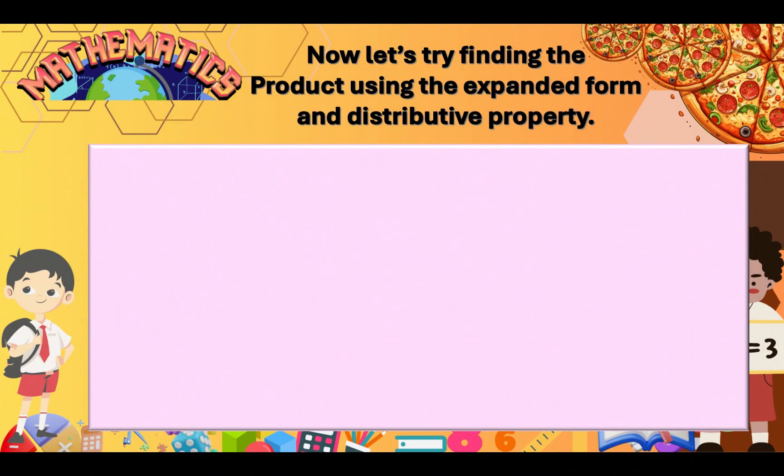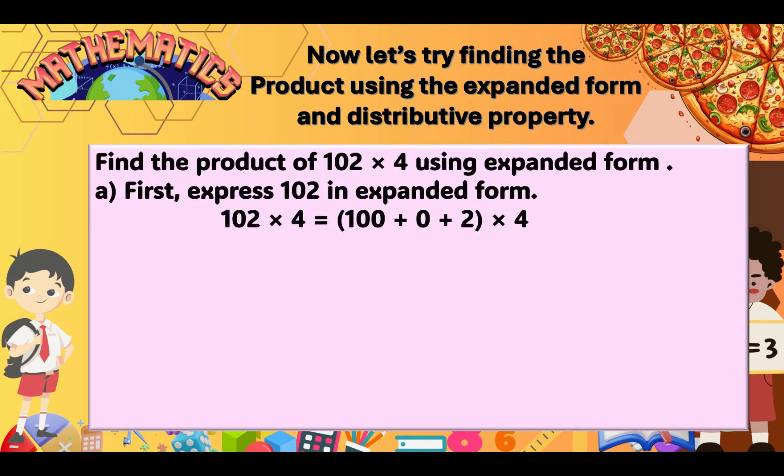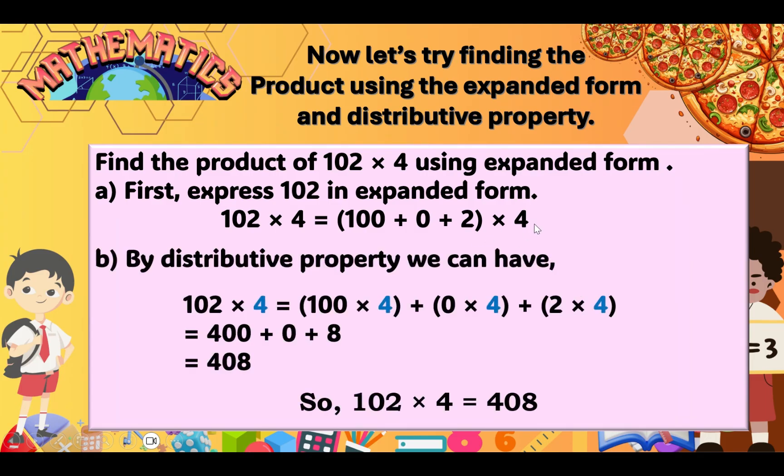Now, let's try finding the product using the expanded form and distributive property. Find the product of 102 times 4 using expanded form. So, first, express 102 in expanded form. So, that is 102 times 4 equals 100 plus 0 plus 2. So, 100, 0 tens, 2 ones times 4.